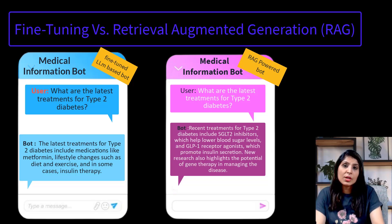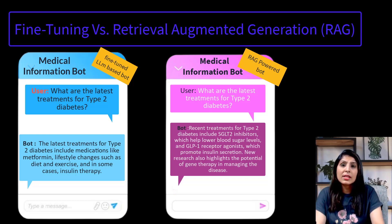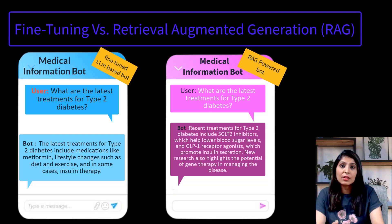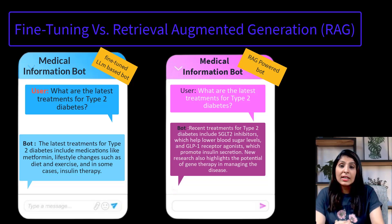RAG is best for situations where you need the most current information. For example, news-related apps where news changes daily — you can use RAG here. Another example is legal cases and regulations, since law and legal cases are frequently updated, and RAG can fetch the latest legal texts. For instance, if somebody asks what are the new data privacy regulations, with RAG you can provide your LLM with the latest legal information so your chatbot can reply to questions based on very recent topics.